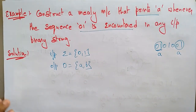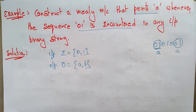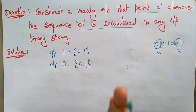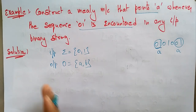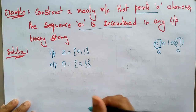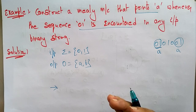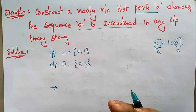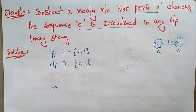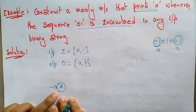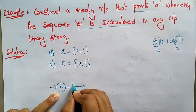To construct this Mealy machine, first construct the deterministic finite automaton (DFA) for the given question — that makes it easier. Since I need to print 'a' whenever the sequence '01' is encountered, and there are two characters, the total number of states is length plus one, which gives three states. Let 'A' be the initial state.